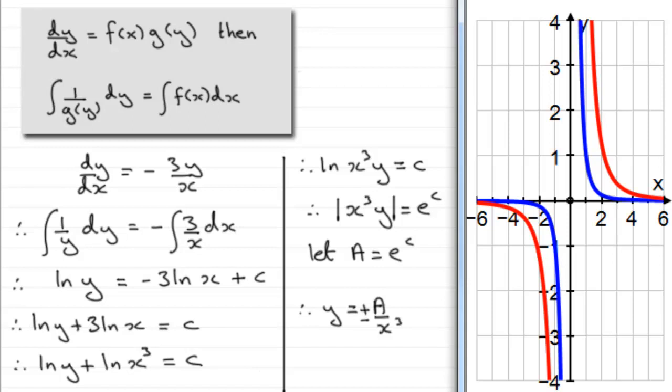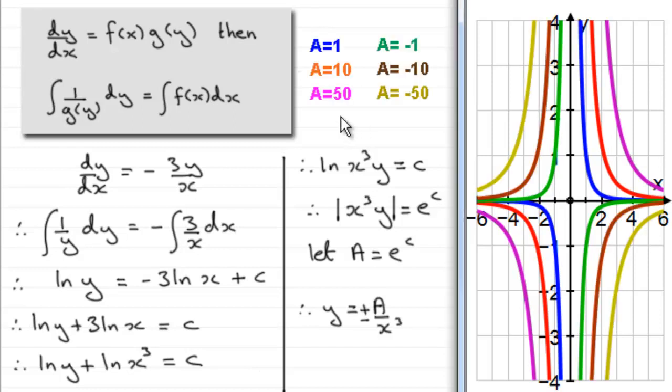Remember that a can be a negative value. So if a equals minus 1, we get the green graph, and we have similar results for a equaling minus 10 and minus 50. I've given you a key here for these graphs. We call this system a family of curves for various values of our constant, in this case a.